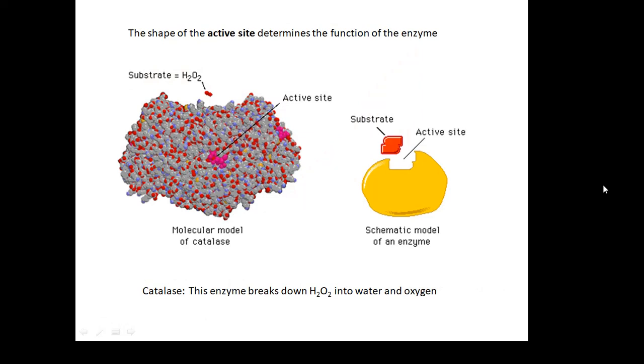The active site will determine the function of the enzyme. Here's some hydrogen peroxide. We'll talk later about an experiment with enzymes and hydrogen peroxide. The hydrogen peroxide fits nicely into the active site, and then it can be broken down.